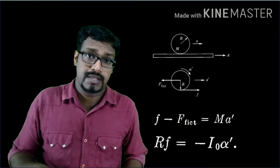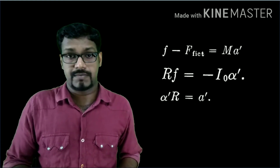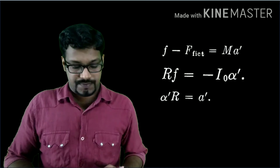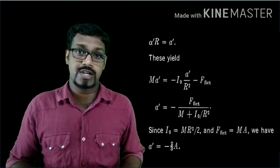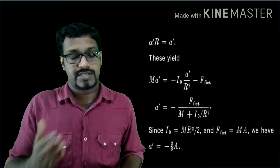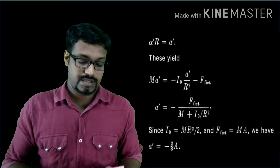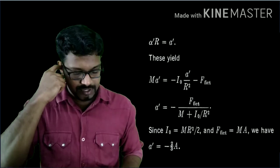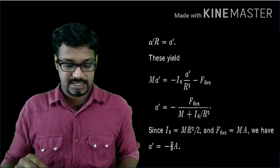If the cylinder is rolling without slipping, you can convert angular acceleration into linear acceleration: R times alpha prime equals A', or alpha prime equals A' divided by R. Substituting back gives F equals minus I₀ A' divided by R squared. Substituting into the equation M A' equals f minus F_fictitious, we get M A' equals minus I₀ A' by R squared minus F_fictitious. Rearranging, A' times (M plus I₀ by R squared) equals minus F_fictitious, so A' equals minus F_fictitious divided by (M plus I₀ by R squared).